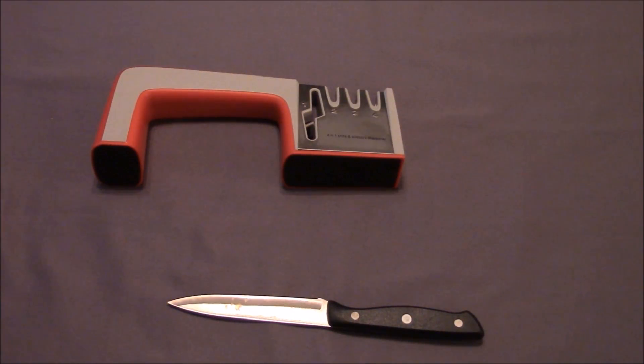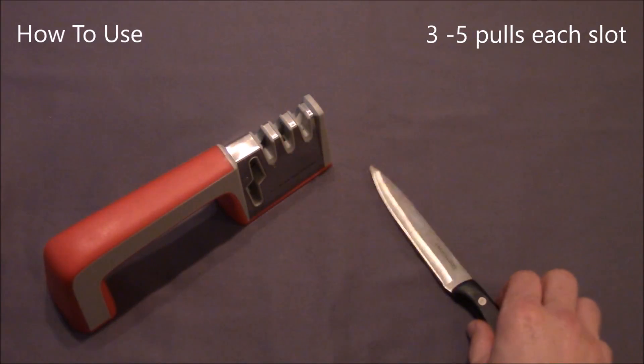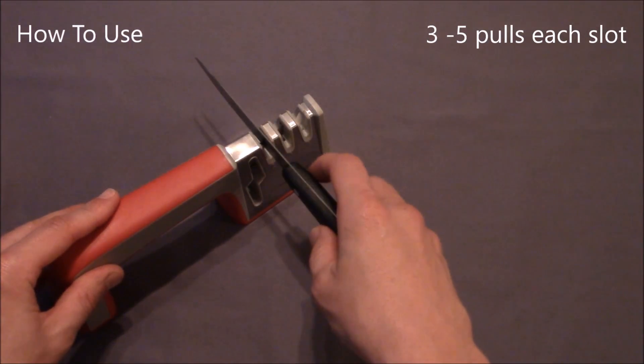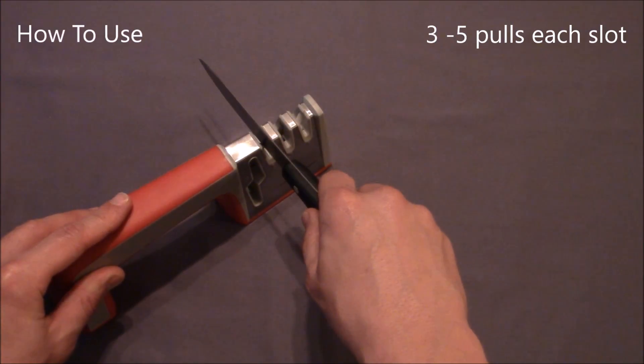And now let's go over how to use this knife sharpener. I will take my typical kitchen knife and place it in slot three very lightly, and I'll let the weight of the blade be the only pressure that I apply, and I'll pull backwards in one direction only for four pulls.